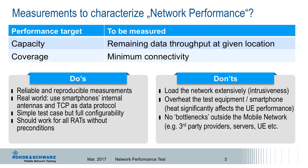What is network performance? Network performance is more or less capacity — what is the remaining data throughput at given locations that I can get from the network, from the cell? The second point is coverage: what is the minimum connectivity? Are there any coverage holes? And so on.